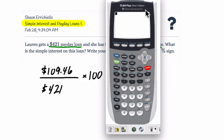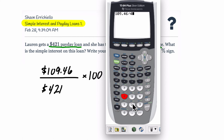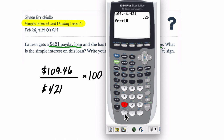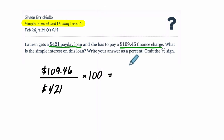Okay, so there's my calculator. Take $109.46 and divide it by the loan amount. Okay, so it's telling us about 20.26. So it's 26% — multiply by 100 to see that. 26% of the loan is interest.